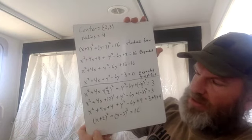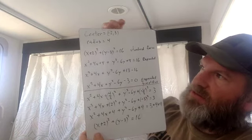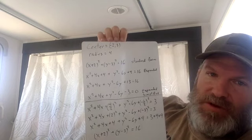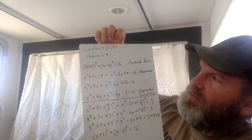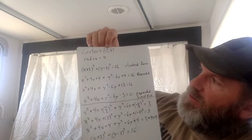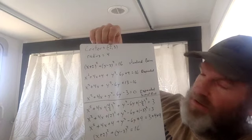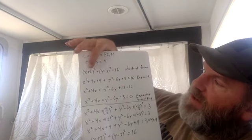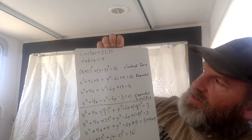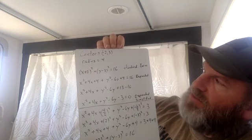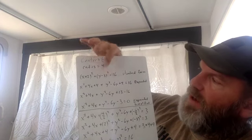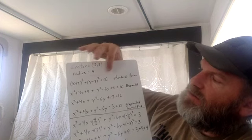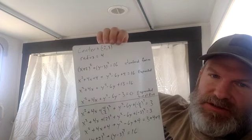Let's start off with a basic example of a circle. Say you're given the center and the radius — you could turn that into an equation. You would put the x-coordinate of the center with the x parenthesis and remember to change the sign, so it's x plus two. The y-coordinate of the center goes in the y parenthesis — change the sign — and square the radius. So that's the equation of the circle.